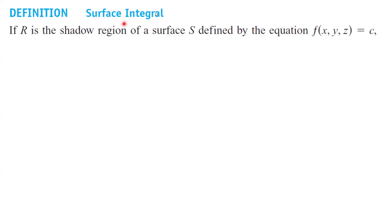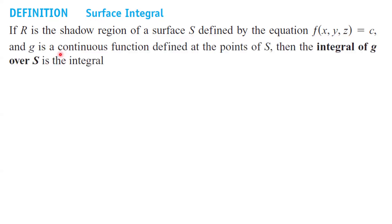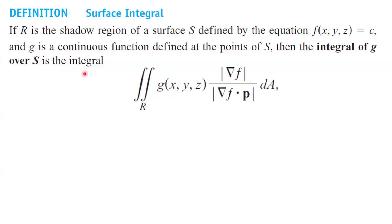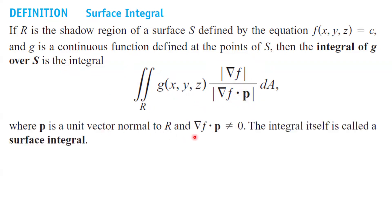The next important topic is calculating the surface integral. If R is the shadow region of a surface S defined by the equation f(x, y, z) = c, and g is a continuous function defined at points of S, then you can calculate the integral of g over this surface. This integral is the double integral of g times the magnitude of the gradient of f, divided by the magnitude of the dot product between the gradient of f and p, dA. Remember that p is the unit normal vector. The integral itself is called the surface integral — you are calculating the integral of g over surface S.